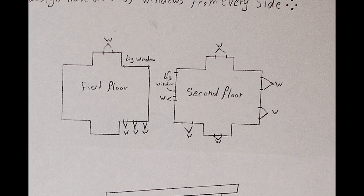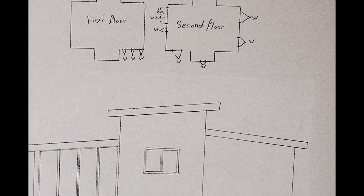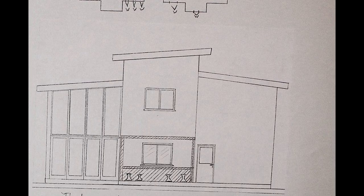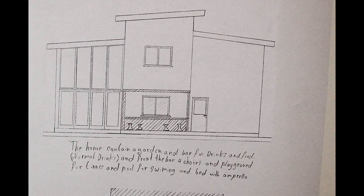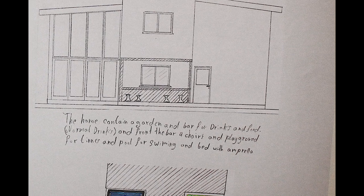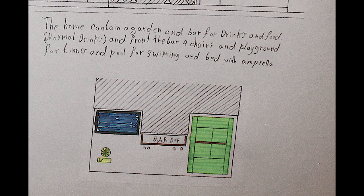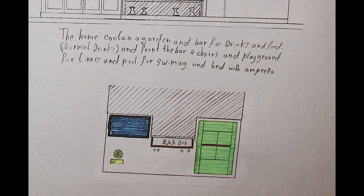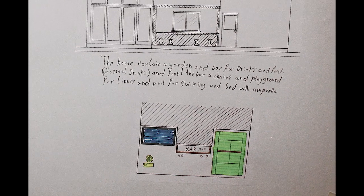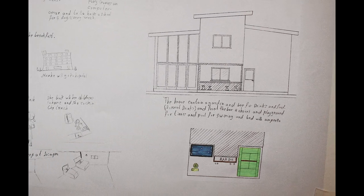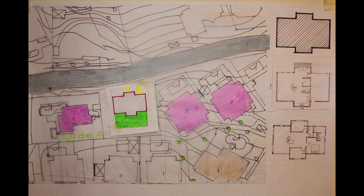Now talking about the concept — the design has many windows on every side to provide a good view. The home contains a garden, a bar for normal drinks, chairs, a playground for tennis, a swimming pool, and sun beds with umbrellas. We will see the garden in another plan and sketch. Now we will look at the site map and some floor plans.